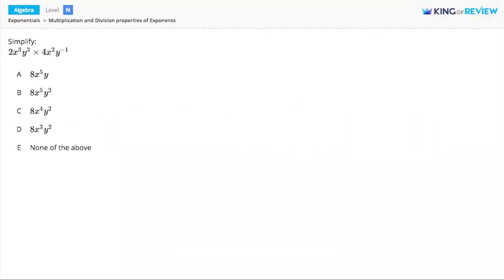Hi, this is King of Review. Here we have to simplify the product of 2x to the third y to the third times 4x to the second y to the negative first.